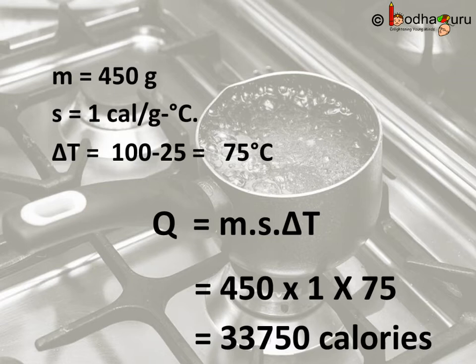So, Q is equal to 450, which is M, multiplied by 1, which is S, multiplied by 75, which is delta T.